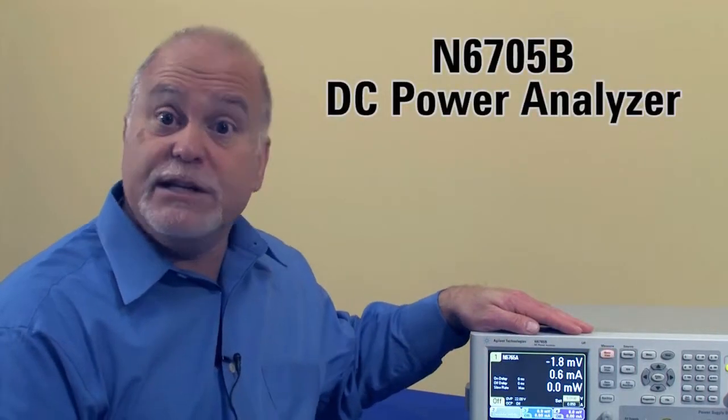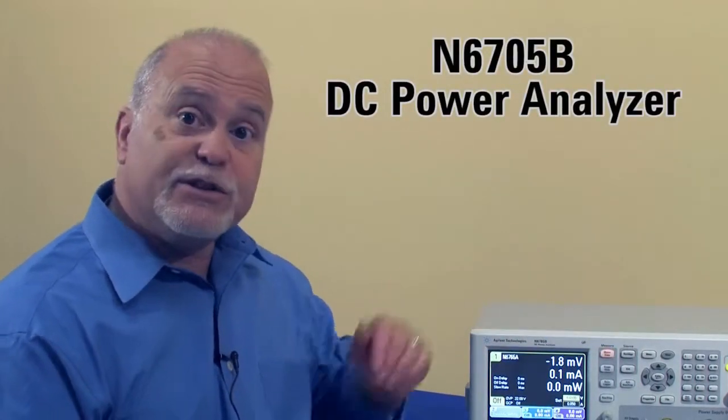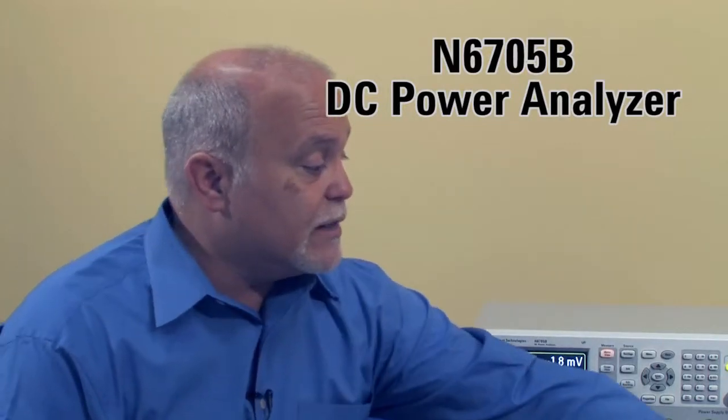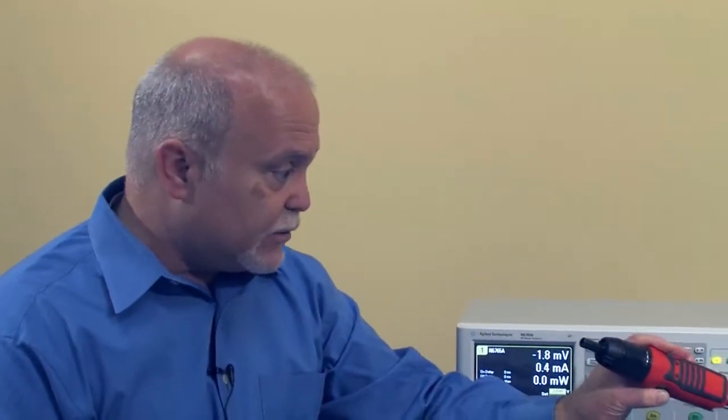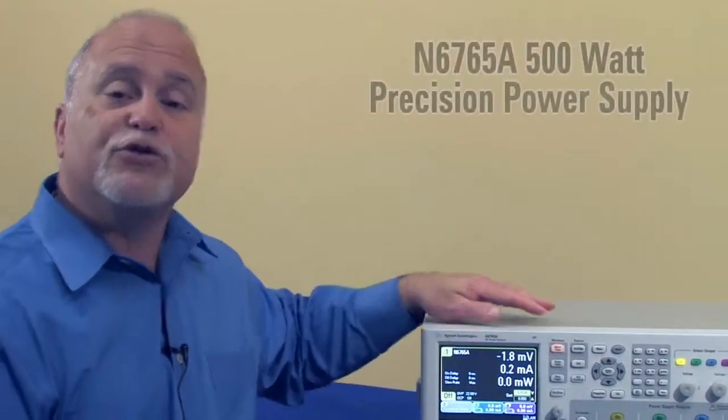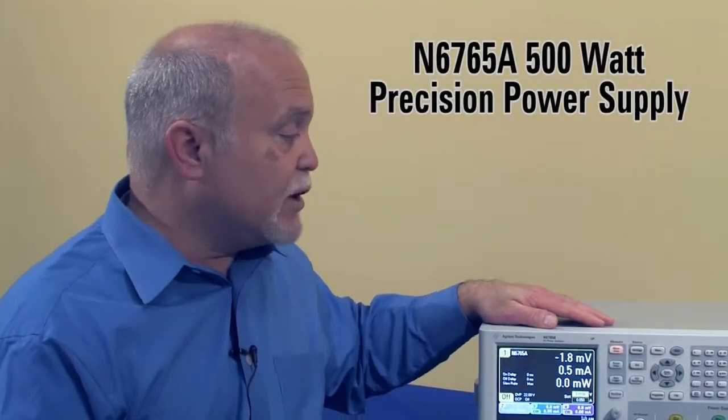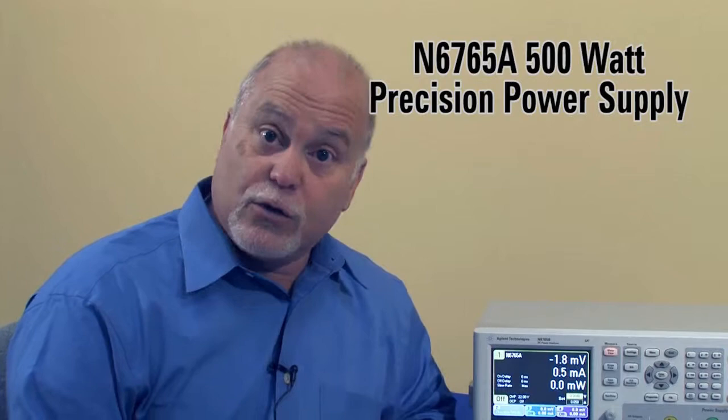Hi, my name is Bob Zollo and I'm a product planner with Agilent Technologies. Today I'm going to demonstrate this product, the N6705B DC power analyzer. The demonstration I'm going to do is power up this cordless drill screwdriver using a 500-watt precision power supply module that we have installed in channel one of this four-channel DC power analyzer.